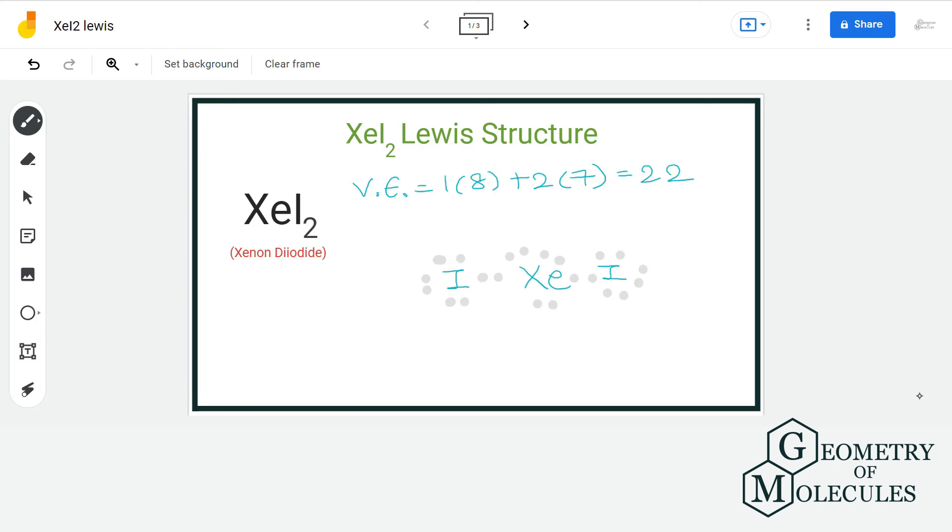Now, as you can see, in this structure, xenon has 10 electrons in its outermost shell and that is okay as xenon can expand its octet and can hold more than 8 electrons. So, this is the final Lewis structure of XeI2.